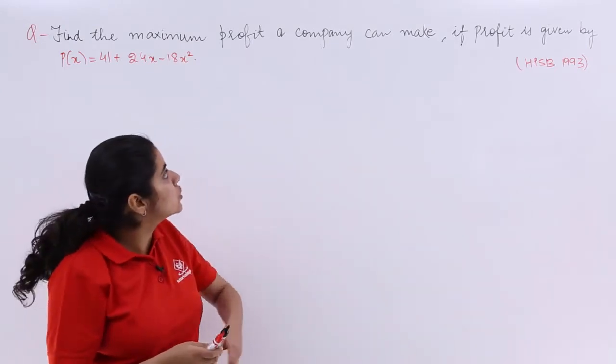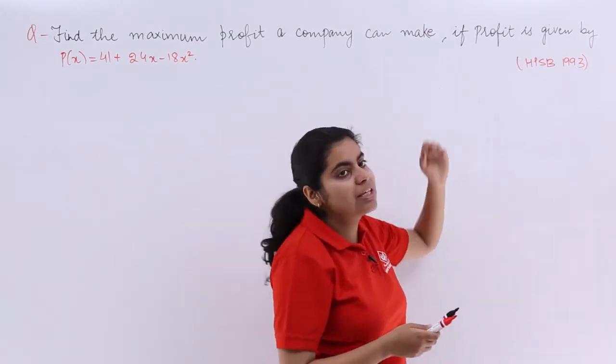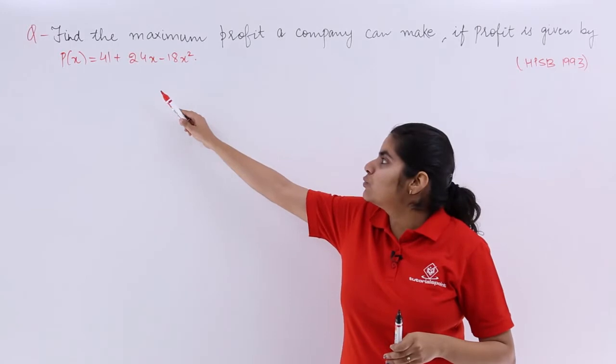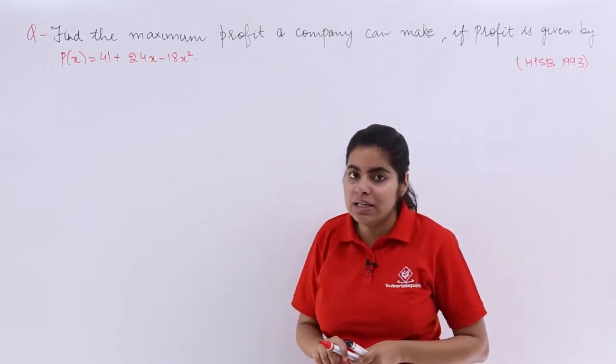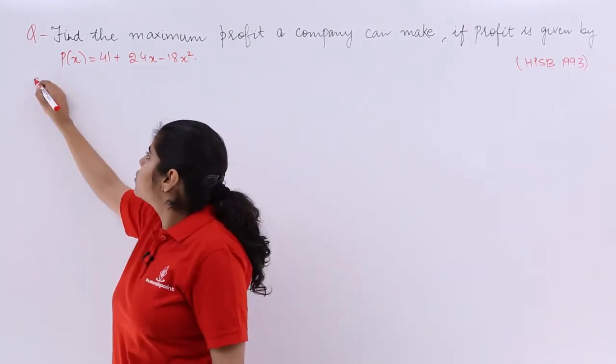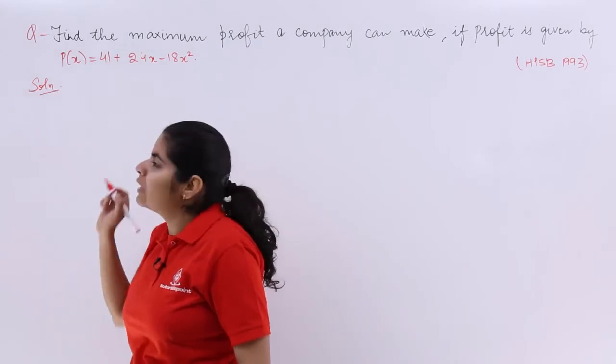It says find the maximum profit a company can make if the profit is given by P(x) = 41 + 24x - 18x². A previous examination question. Again I'll be writing the solution and let's see how we can do it.